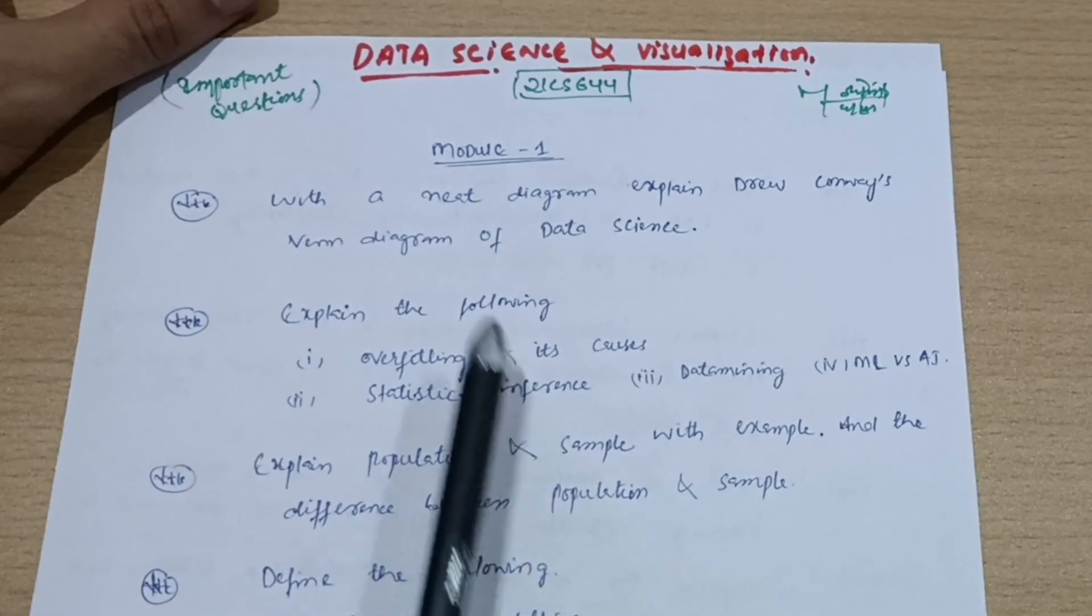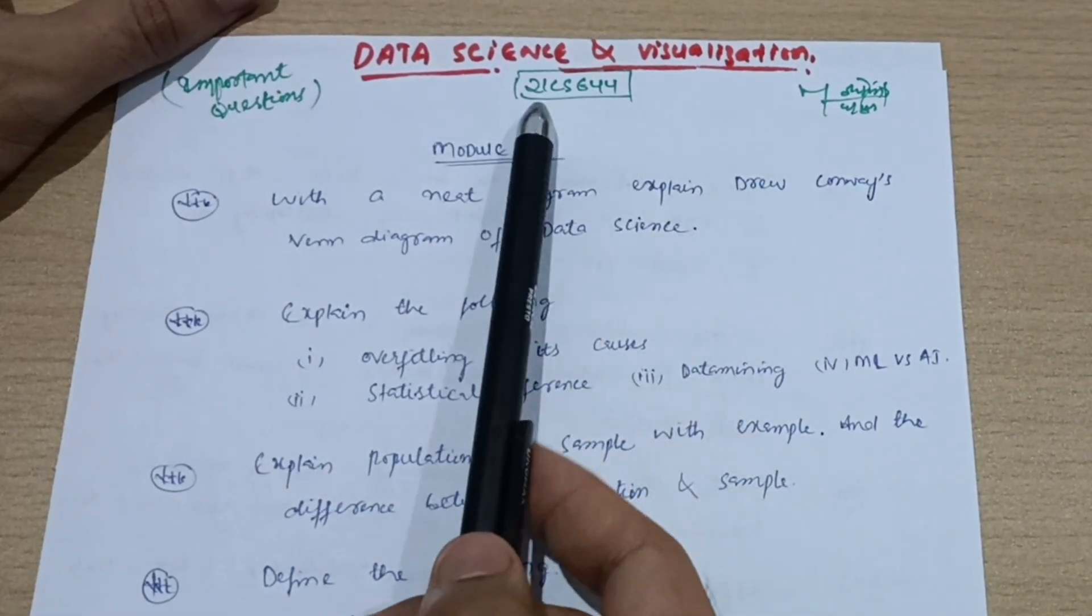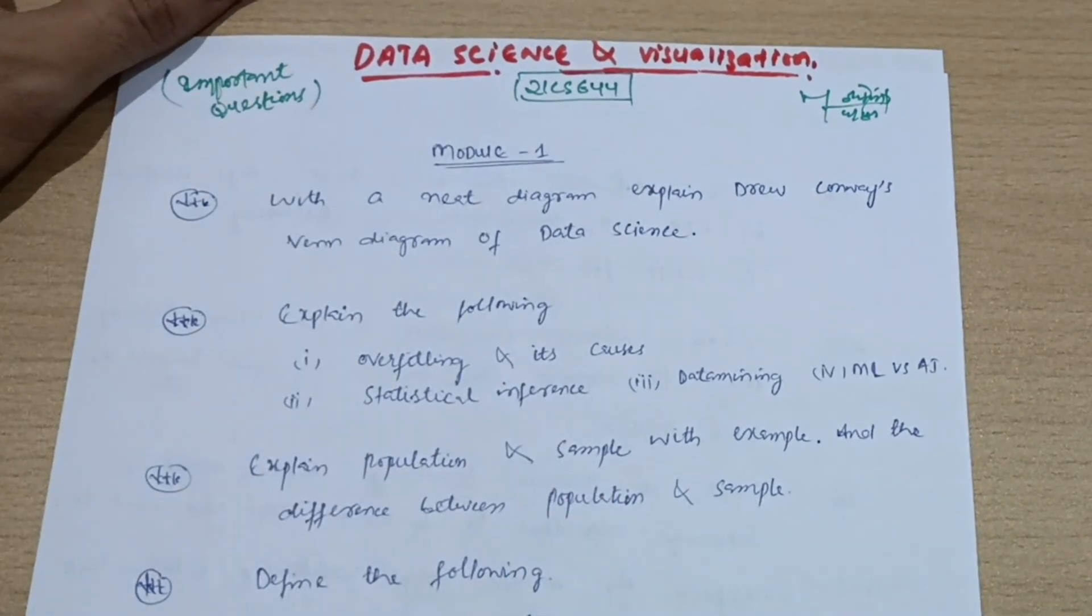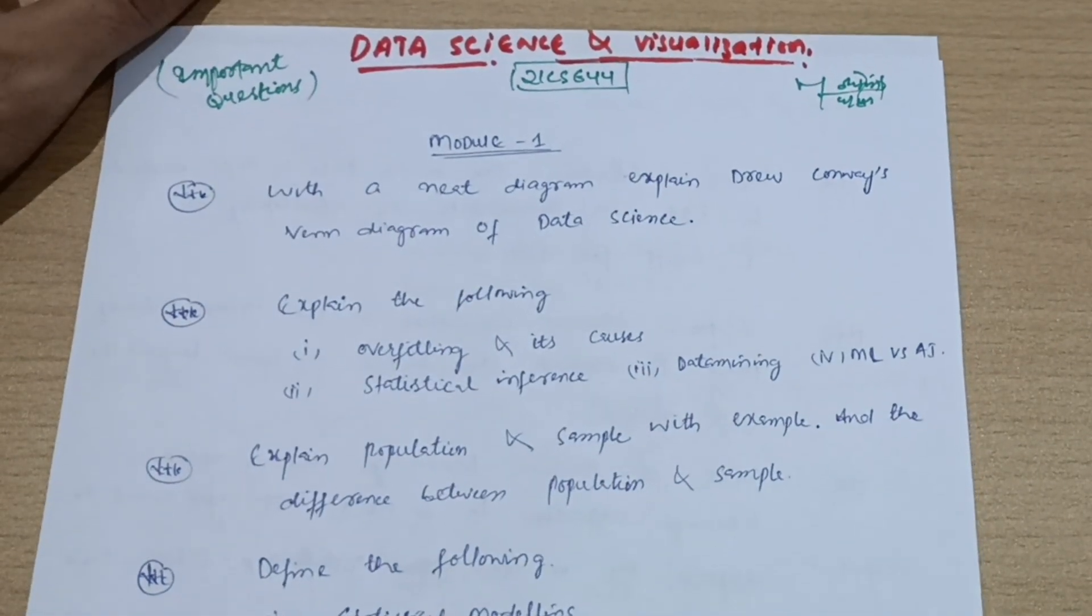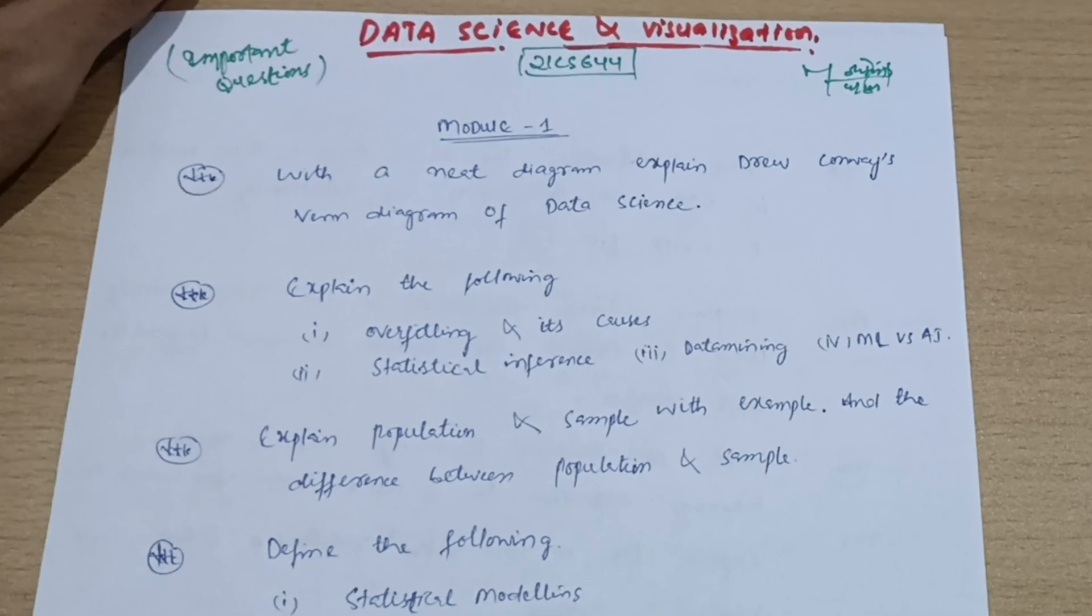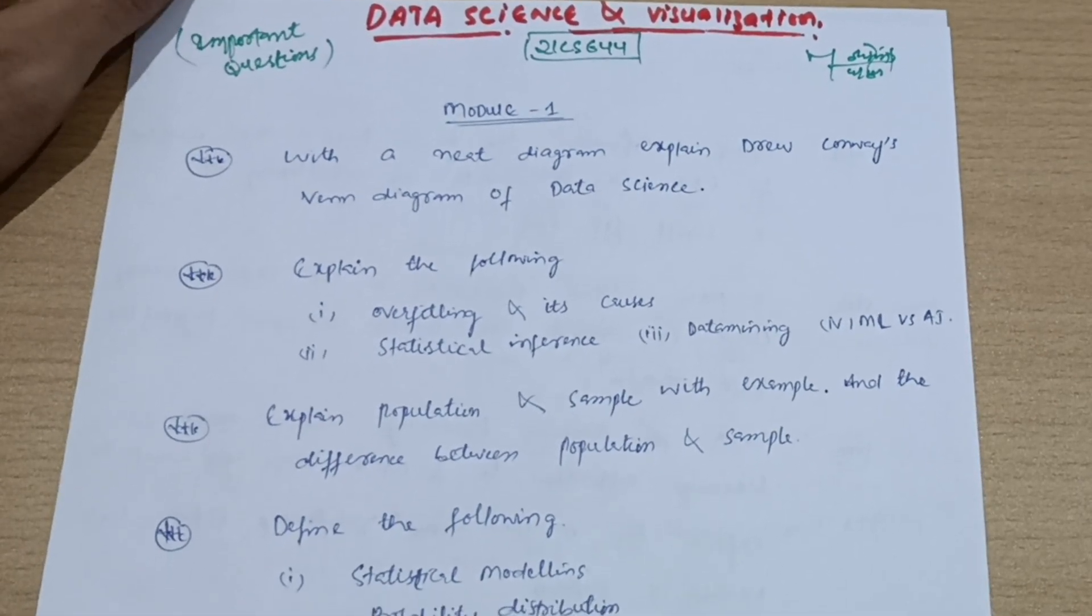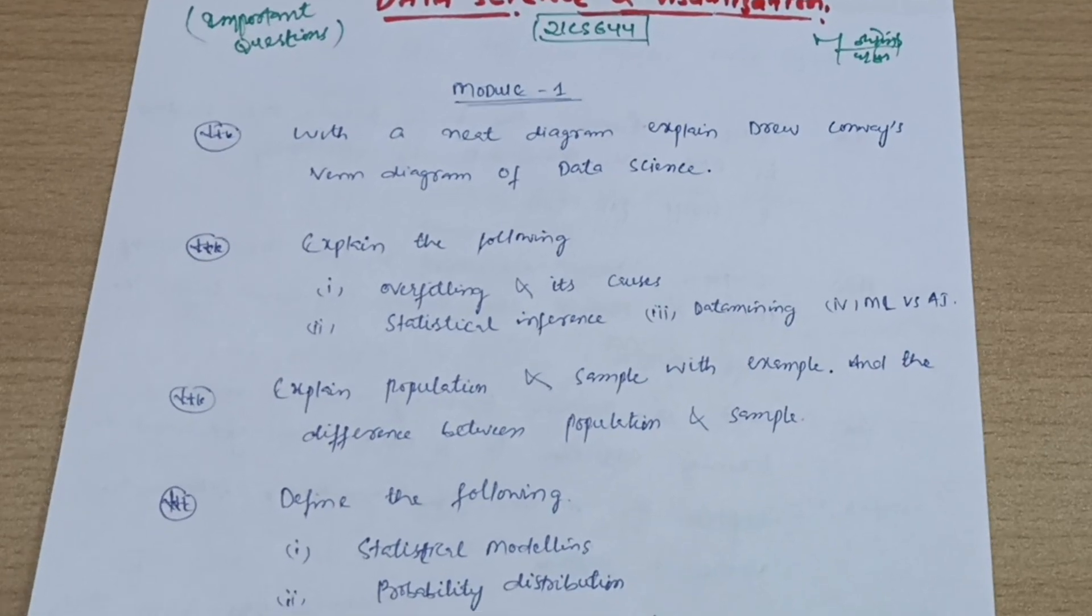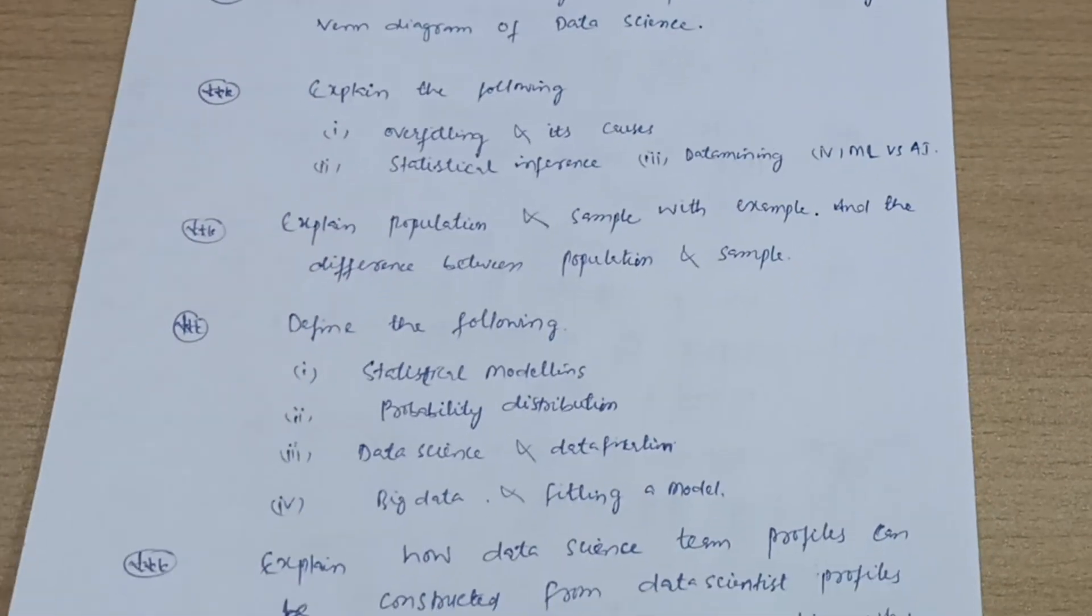Okay, so this is the subject Data Science and Visualization, subject code is 21CS644. These are some super important questions. So instead of wasting your time, it is better to provide link in the description box for these important questions module-wise. If somebody wants to take screenshots also, they can take screenshots. Otherwise, link will be available in the description box.